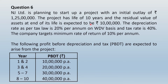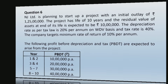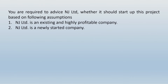Let us read this question. NJ Limited is planning to start up a project with an initial outlay of rupees 1 crore 25 lakhs. The project has a life of 10 years and the residual value of assets at end of its life is expected to be rupees 10 lakhs. The depreciation rate as per tax law is 20 percent per annum on WDV basis. Tax rate is 40 percent. The company targets a minimum rate of return of 10 percent per annum. The following profit before depreciation and tax (PBDT) are expected: years one and two — rupees 10 lakhs per annum; three and four — rupees 20 lakhs per annum; five to seven — rupees 30 lakhs per annum; and eight to ten — rupees 40 lakhs per annum.